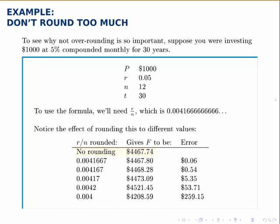If we round that off to 0.0041667 — rounding off after 7 decimal places — we get an F of $4,467.80, which is pretty close to the exact value; it's only off by 6 cents.